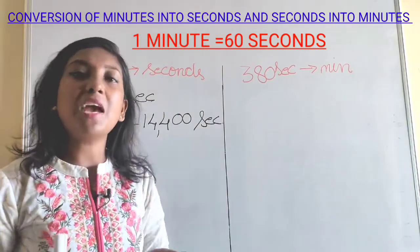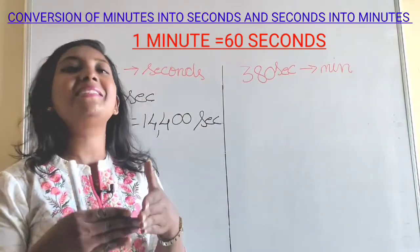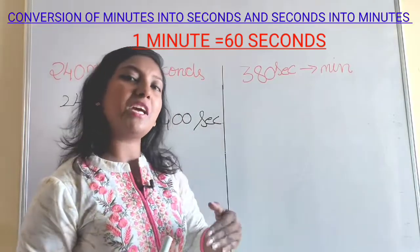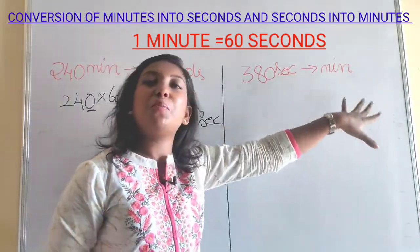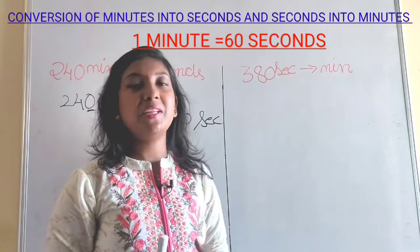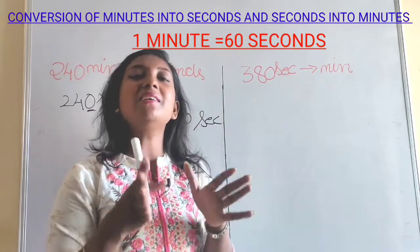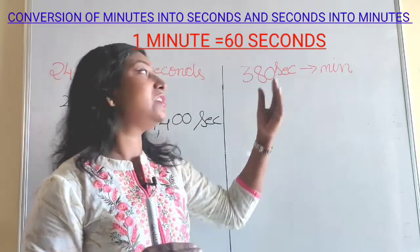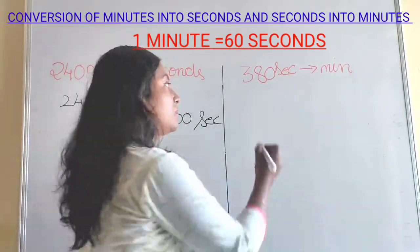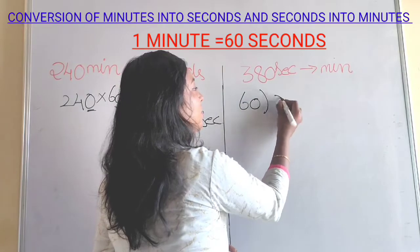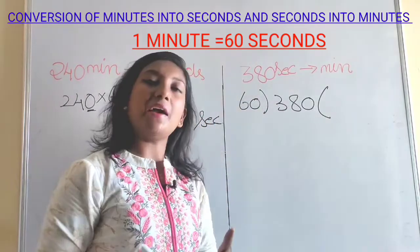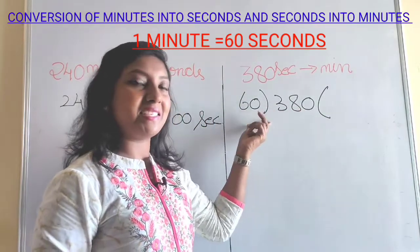So we multiplied by 60 seconds. Now let's see how to convert 380 seconds into minutes. When converting seconds into minutes, we simply do division — divide 380 by 60. I have written both methods here.